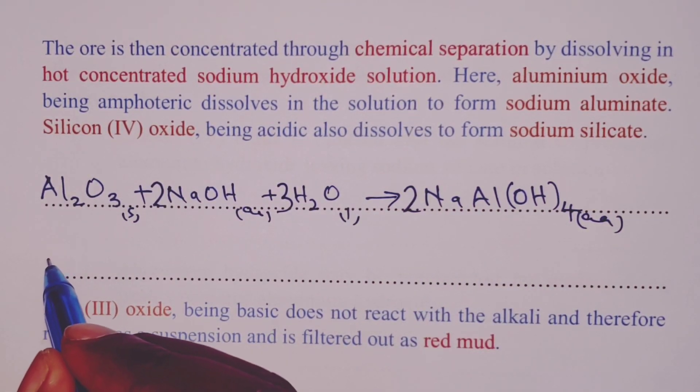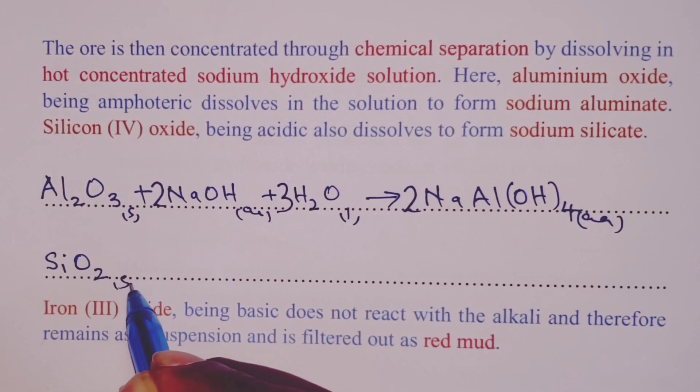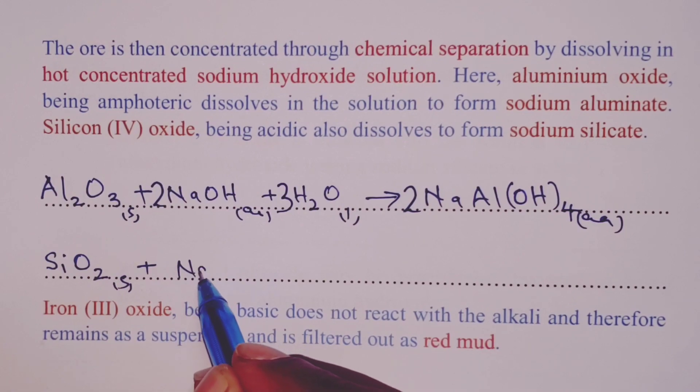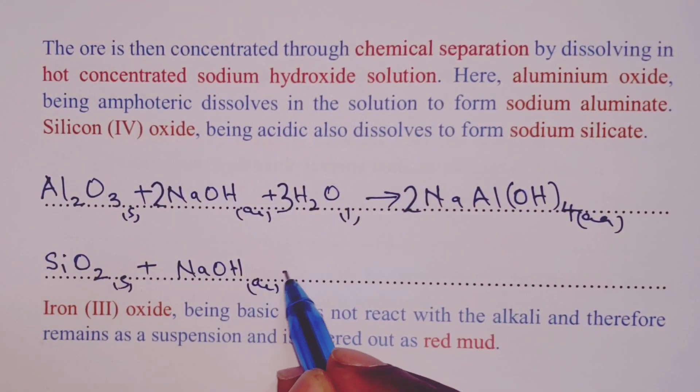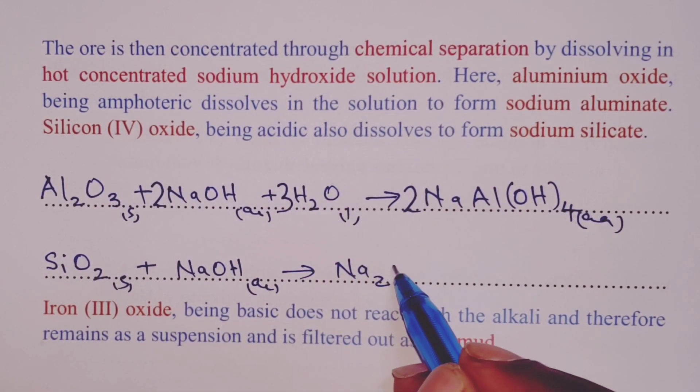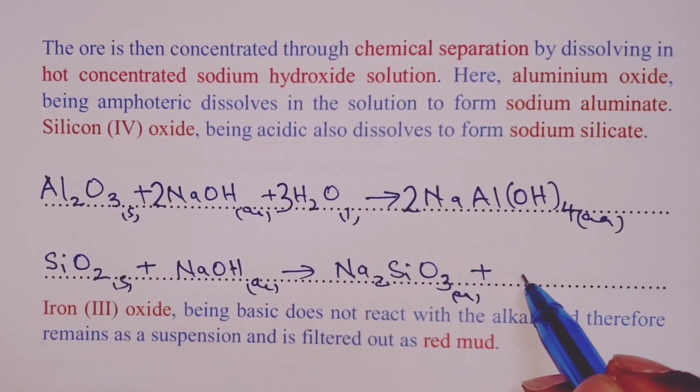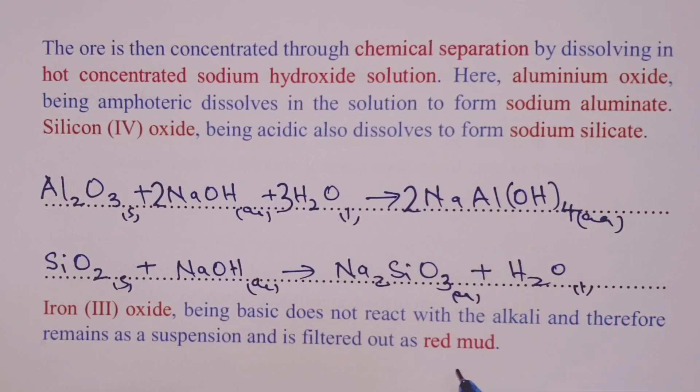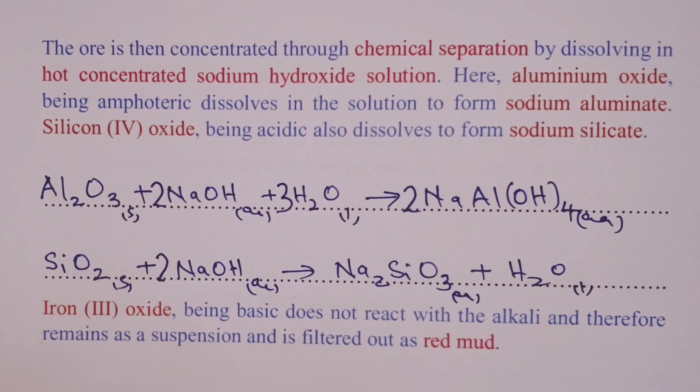When it comes to silicon (IV) oxide, the reaction will be as follows: Silicon (IV) oxide reacting with sodium hydroxide, and we form sodium silicate, of course together with some water. Sodium silicate will be aqueous and water is a liquid. We shall balance with a 2 on sodium hydroxide.